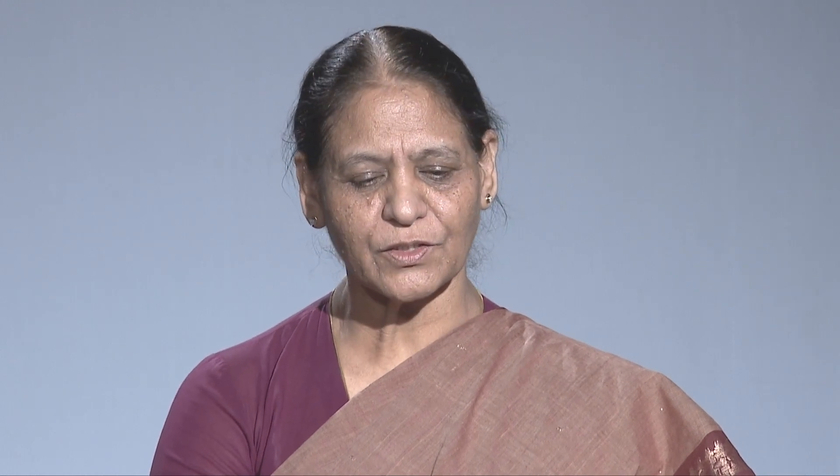Now let's examine when to use a particular technique for determining the correlation. Spearman rank order correlation is used when both variables are on ordinal scale. For example, if you have a set of samples ranked on the basis of their height and also ranked on the basis of their performance, you can establish the relationship between height and performance. It only indicates the magnitude of relationship between the two variables.